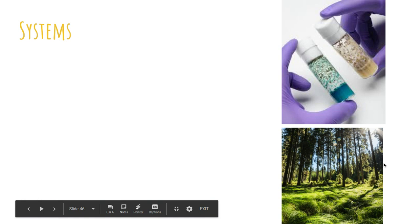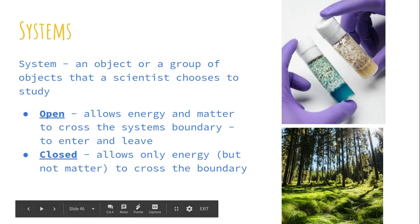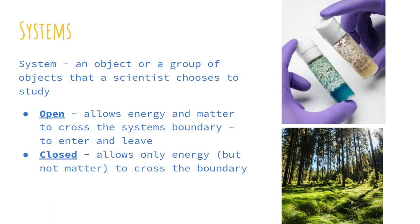We're going to start with this idea of systems. There are two types of systems in the world. There's something called an open system, which allows all energy and matter to cross different boundaries — anything can enter and leave — or we have what's called a closed system, which only allows energy to leave, but no matter.